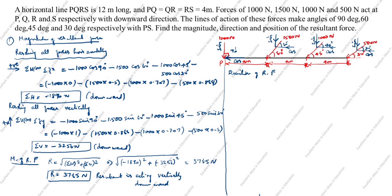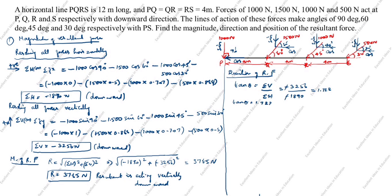The formula for direction is: tan θ = ΣV / ΣH = −3256 / −1890. The two negatives cancel, giving 1.722. So tan θ = 1.722, and θ = tan⁻¹(1.722) = 59.8°, approximately 60°.